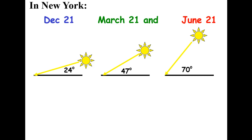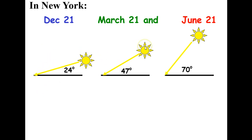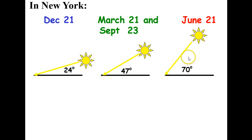If we look at the angle of insolation during winter, we see that the sun comes in at a 24-degree angle. On March 21st and September 23rd, we have a slightly greater angle of insolation — those are our equinoxes, spring and fall. And then we have summer at a 70-degree angle of insolation, when our sun is closest to being perpendicular.